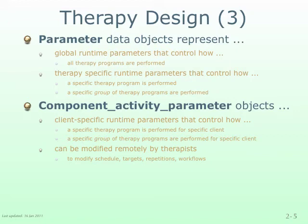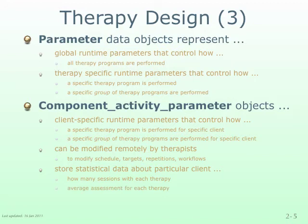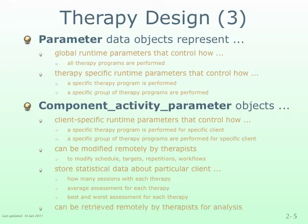Component activity parameter data objects can also be used to store statistical data about a particular stroke survivor client, such as how many sessions were completed for each prescribed therapy, an average assessment rating for each prescribed therapy, and the best and worst assessment rating for each prescribed therapy. These data objects can be retrieved by therapists for analysing or monitoring purposes without the need to organise a meeting between therapist and stroke survivor.